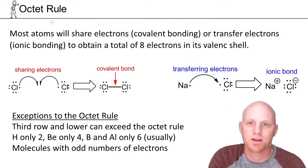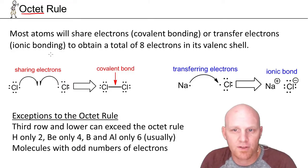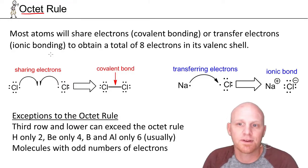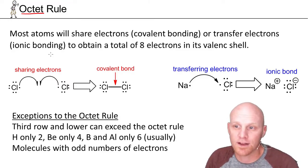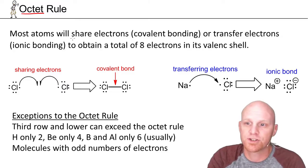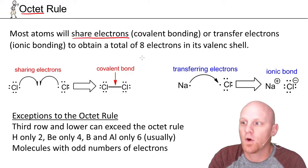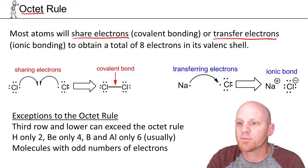To start this off, we've got to talk about the octet rule. As a reminder, the octet rule is simply that most atoms want to have eight electrons around them — whether that's through sharing electrons via covalent bonding, or through a transfer of electrons via ionic bonding.